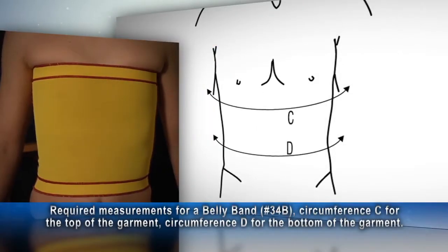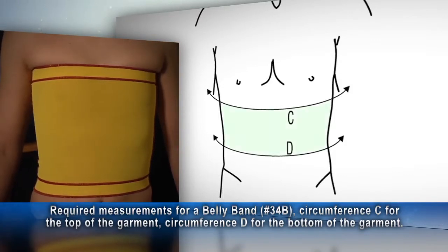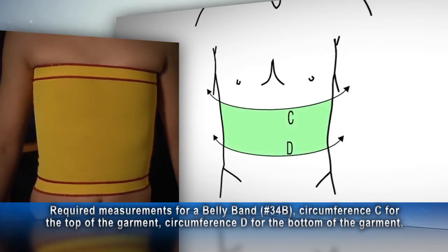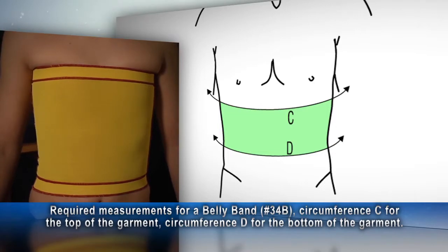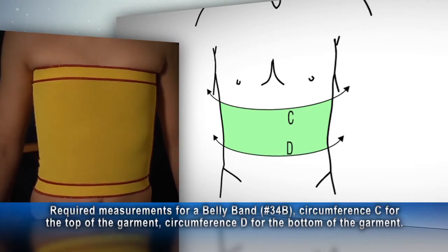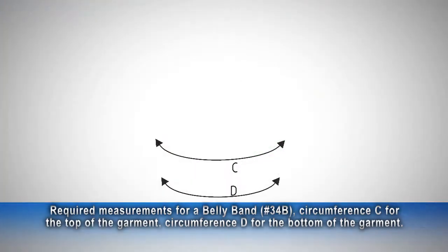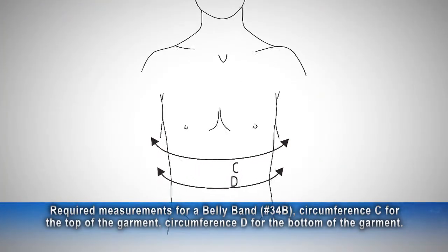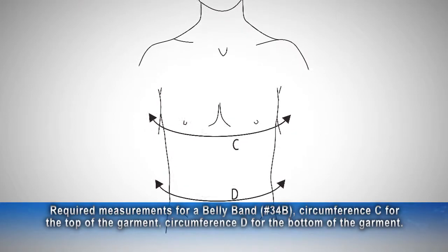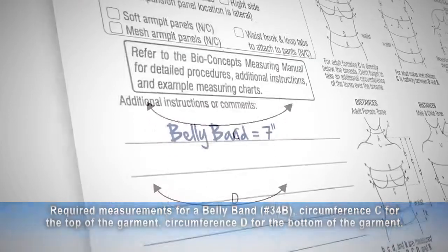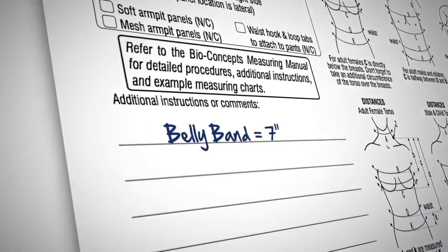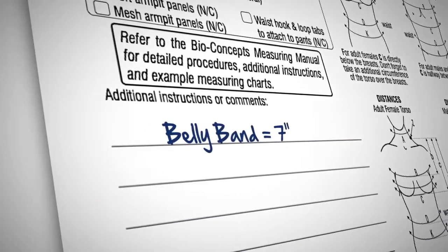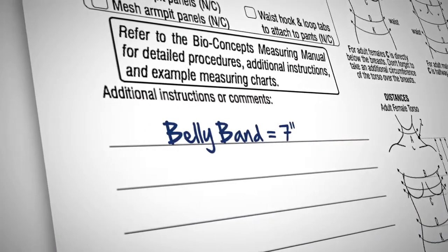When measuring for a belly band, use circumference measurement C for the top of the garment and circumference measurement D for the bottom of the garment. These measurements can be as far apart or as close together as needed. Just measure the height and write it in the additional instructions.